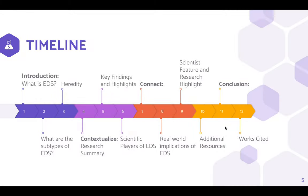Here's a timeline of this presentation. We're going to describe what EDS is, what are the common subtypes, and how it is inherited. Then we're going to contextualize, through a research summary, the key findings and highlights and scientific players of EDS. Finally, we're going to connect to real-world implications of EDS, a scientist feature and research highlight, and additional resources.